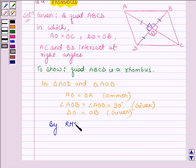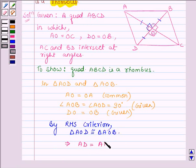Therefore, by right hand side criterion we find that triangle AOD is congruent to triangle AOB. This further implies that AD is equal to AB by CPCT.